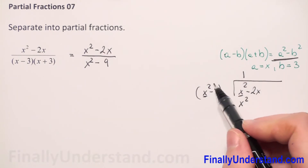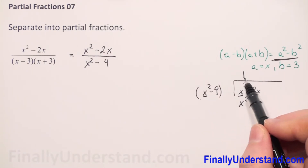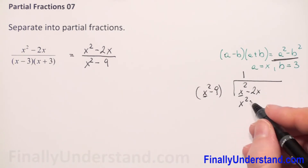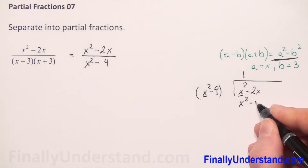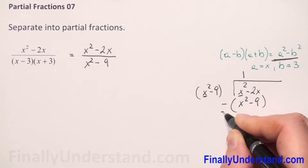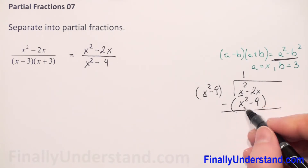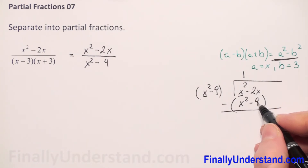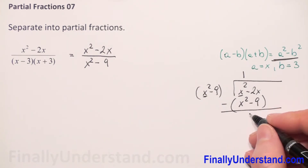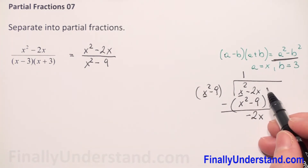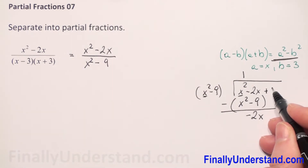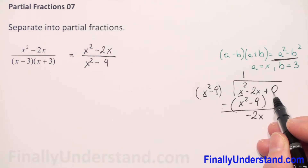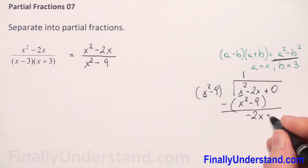Now I have to multiply every term of our expression in parenthesis by 1. So 1 times x squared is x squared, and 1 times 9 is negative 9. I have to take this in parenthesis and now we have to do subtraction. x squared minus x squared is 0. Next we have negative 2x, and we don't have an expression with x in the parenthesis, so we copy negative 2x. We don't have constants here, so this is like 0, and 0 minus negative 9 gives positive 9.